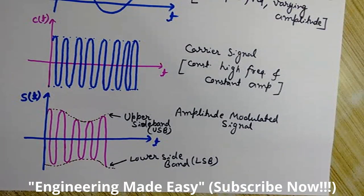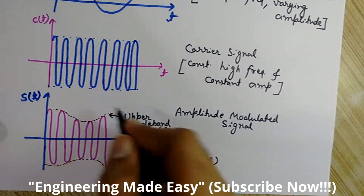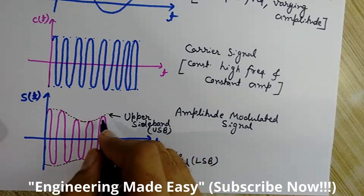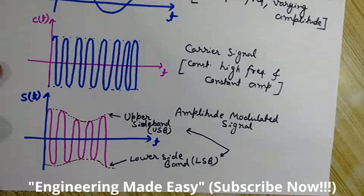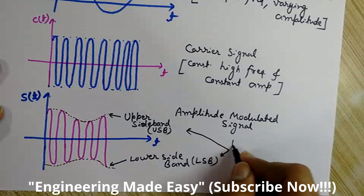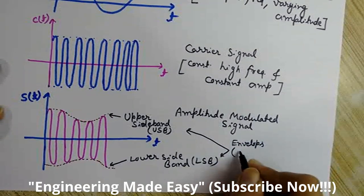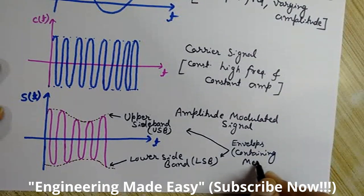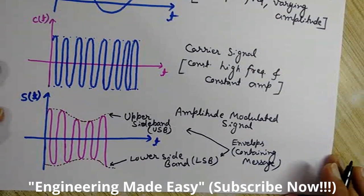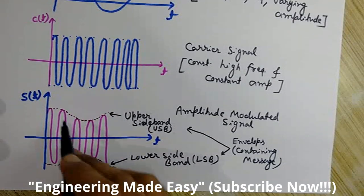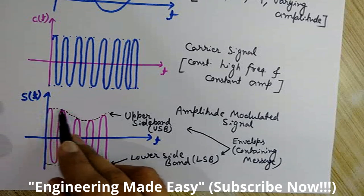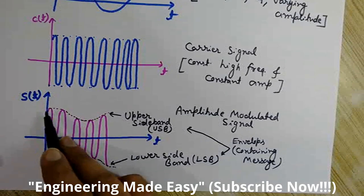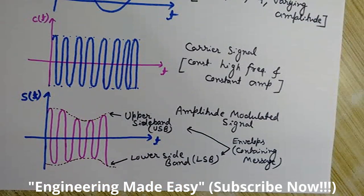These two parts — both upper and lower — are the envelopes containing the message. As you can see, the envelope is obtained by just joining the peak amplitudes of the carrier wave, and its shape is like the shape of the modulating signal. So we can detect, demodulate, or extract the message signal from this envelope.